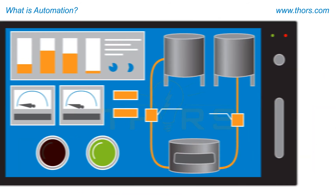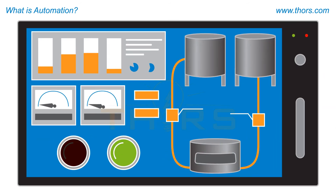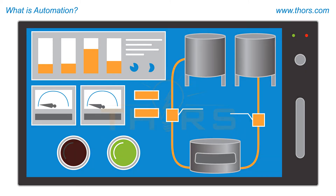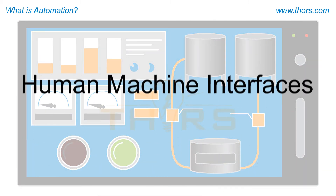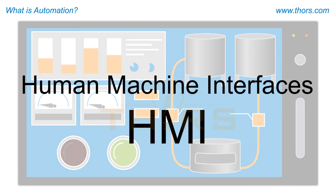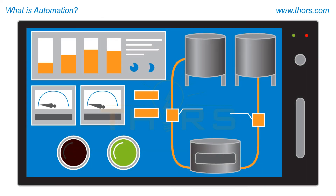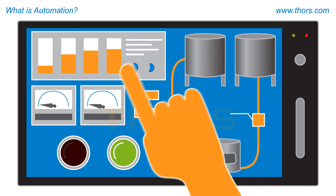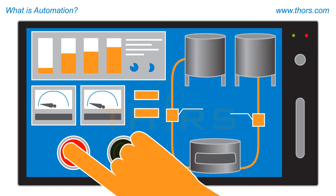Much of the information gathered by automation equipment can be displayed on specialized computers known as human-machine interfaces, or HMI. Operators often control the machinery from the HMI.